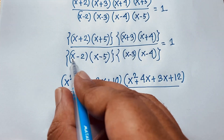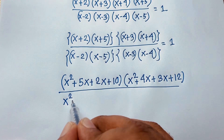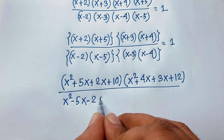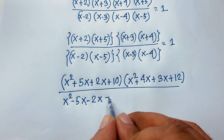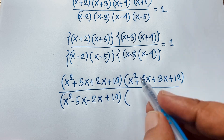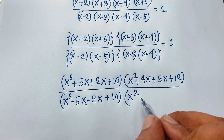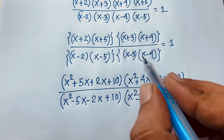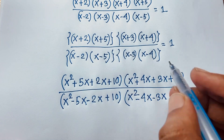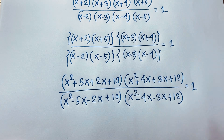And for the denominator: (x-2)(x-5) equals x² minus 4x minus 3x... that is x² - 7x + 10. And (x-3)(x-4) equals x² - 7x + 12, is equal to 1.